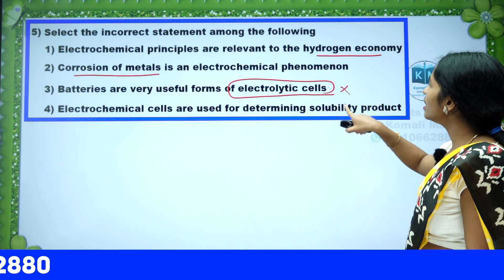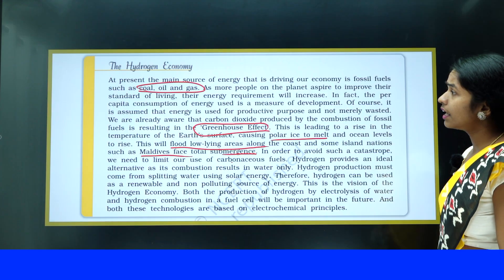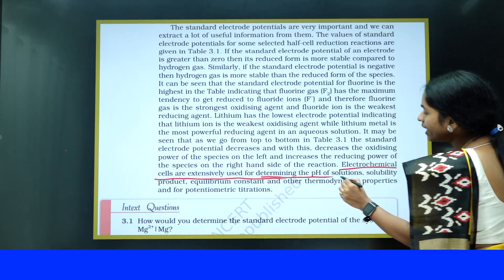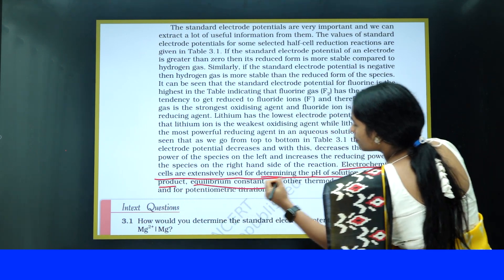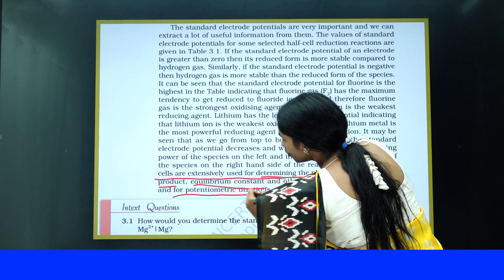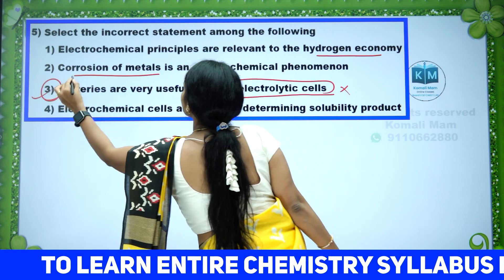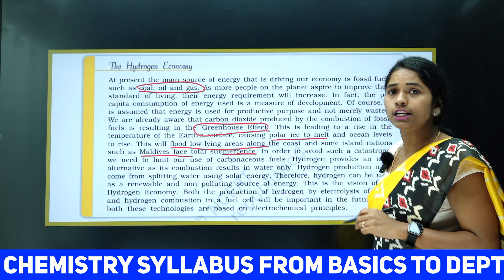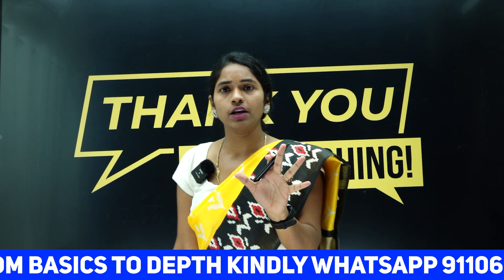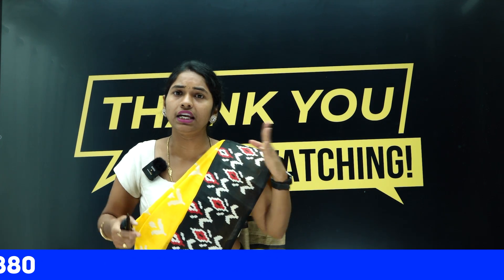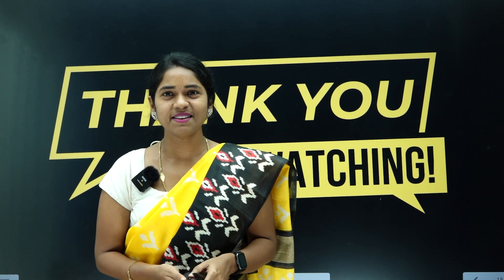Electrochemical cells are used for determining solubility product — is this correct? Yes, electrochemical cells are extensively used for determining the pH of solutions, solubility product, equilibrium constant, thermodynamic properties, and potentiometric titrations. So the incorrect option is the third one — batteries are galvanic cells, not electrolytic cells. In this part I have covered not just five questions but topic-related concepts throughout. In the next part, I will discuss another five model questions, covering the entire electrochemistry chapter in a series of 20 questions. My name is Komali, your chemistry mentor. Thank you so much for watching. See you in the next video. Bye, have a nice day.